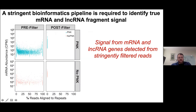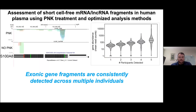Once we apply the filtering, we don't throw everything out — there are still messenger RNA fragments present with PNK treatment. For example, S100A8 shows alignments corresponding to exonic regions in the correct orientation, and importantly, the same fragments appear in defined regions reproducibly across multiple individuals.